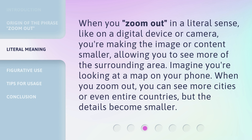When you zoom out in a literal sense, like on a digital device or camera, you're making the image or content smaller, allowing you to see more of the surrounding area. Imagine you're looking at a map on your phone. When you zoom out, you can see more cities or even entire countries, but the details become smaller.